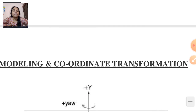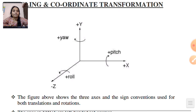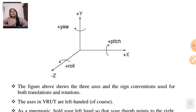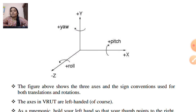Next, we discussed modeling and coordinate transformation. In 3D transformation there are 3 axes. In 2D there are 2 axes — X and Y. But in 3D: X axis, Y axis, and Z axis. The X axis rotation is called Pitch, Y axis rotation is called Yaw, and Z axis rotation is called Roll.